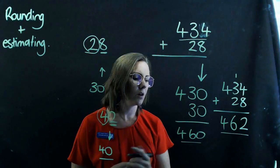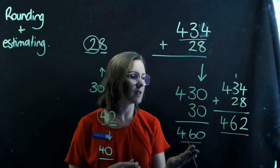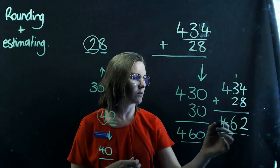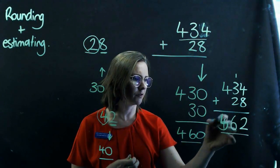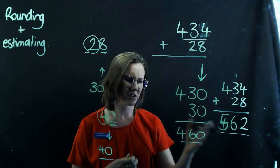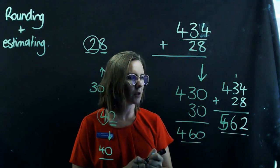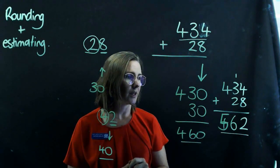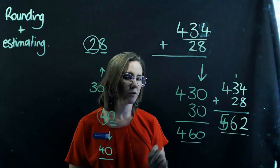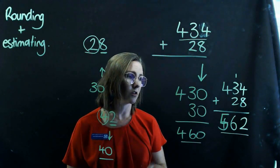If, for example, I rounded it to 460 correctly, and then my answer was like, I don't know, 562, I know, well, that's not really that close. So I might've made an error back here. I'm going to put an example on the board in a second and get you to have a go by yourself. So pause the video, and then I'll show you the answer.